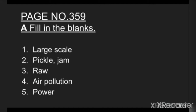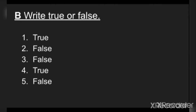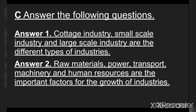Fourth: air pollution. Fifth: power. Question B: Write true or false. First: true. Second: false. Third: false. Fourth: true. Fifth: false. Question C: Answer the following questions. Answer one: cottage industry, small scale industry, and large scale industry are the different types of industries.